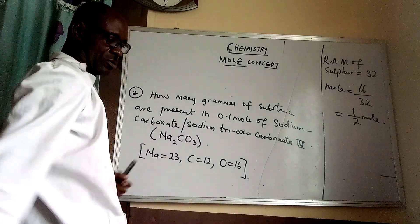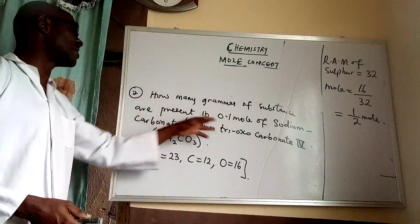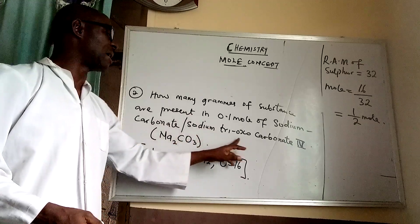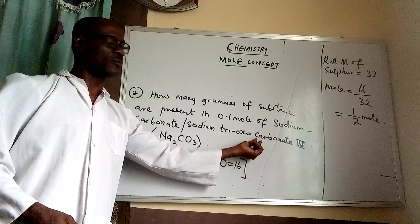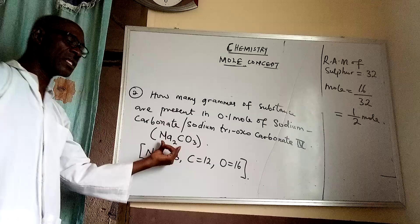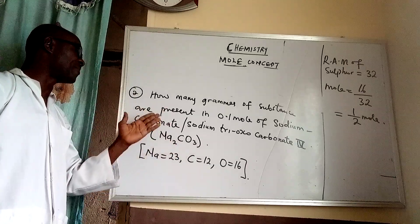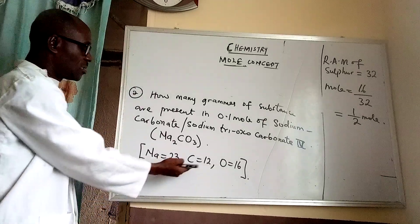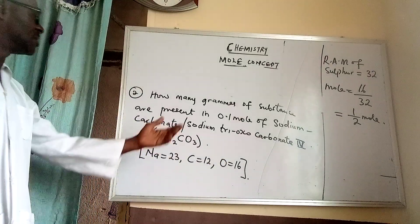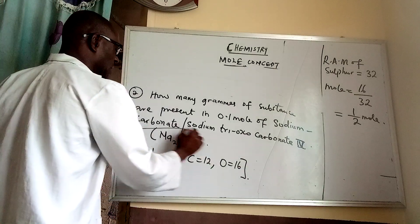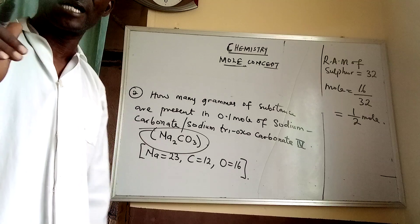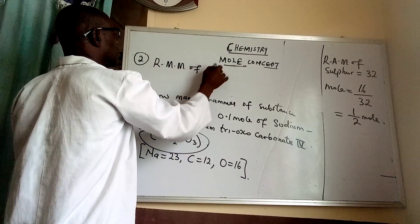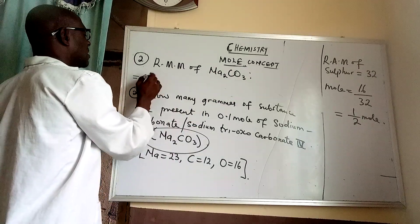For question two, we are asked to find how many grams of substance are present in 0.1 mole of sodium carbonate — also known as sodium trioxocarbonate(IV). The chemical formula is Na₂CO₃. The given atomic masses are: sodium = 23, carbon = 12, oxygen = 16. Since it is a compound, we find the relative molecular mass first.